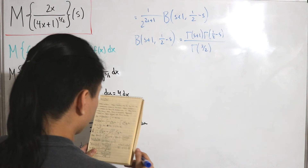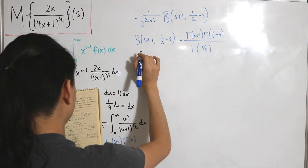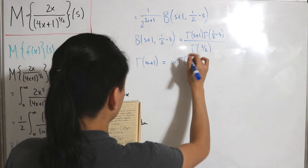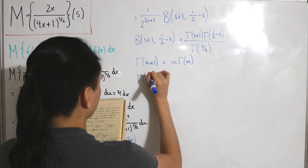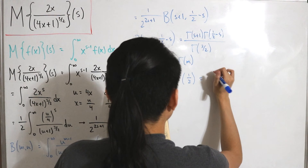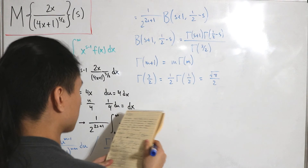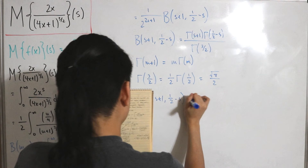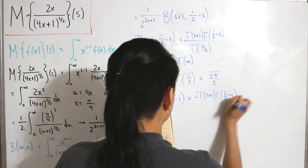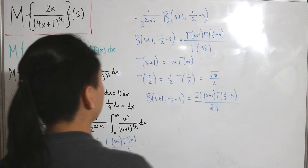This brings us to computing gamma(3/2). Using the recurrence relation gamma(m + 1) equals m times gamma(m), we substitute to find gamma(3/2) equals (1/2) times gamma(1/2). Since gamma(1/2) equals the square root of pi, gamma(3/2) equals the square root of pi divided by 2. So beta(s + 1, 1/2 minus s) equals 2 times gamma(s + 1) times gamma(1/2 minus s), divided by the square root of pi.